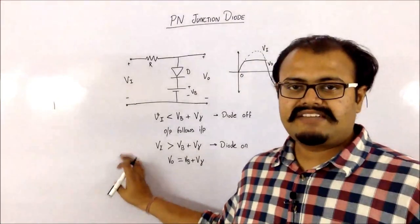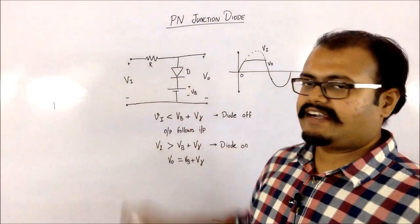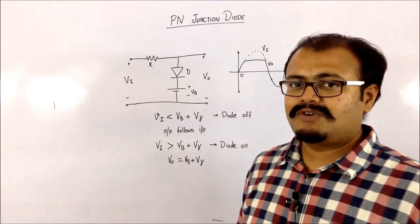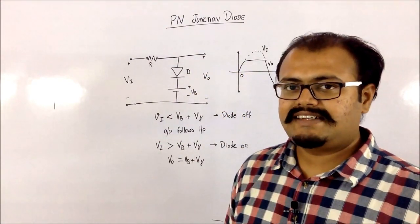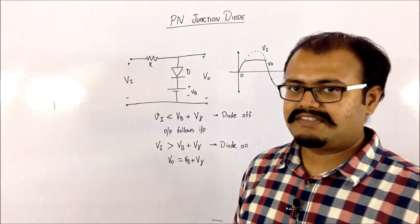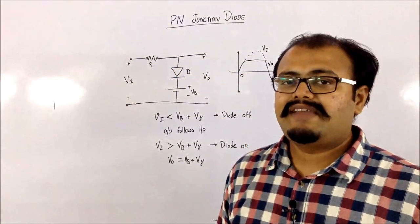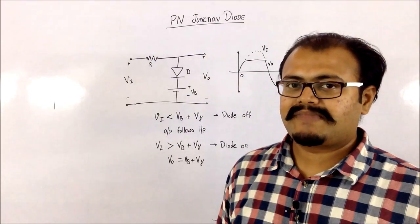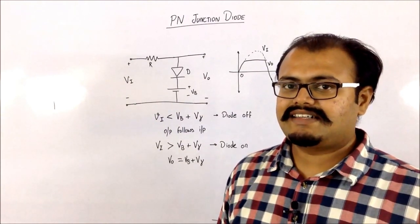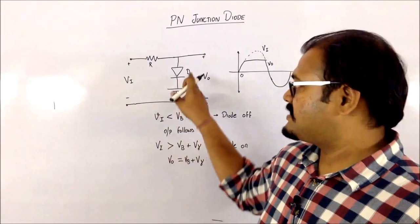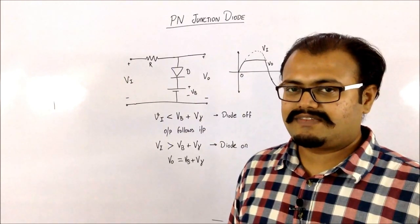So this is my first clipper circuit in which I have this input voltage applied to a circuit containing a resistor, a diode, and a voltage supply given to the diode. The output is taken across the diode and the voltage supply. Now, a diode will be working only when it is forward biased. We are going to consider the piecewise equivalent of a diode, which had a resistor and a voltage supply — and in this we assume the resistance of the diode is zero.